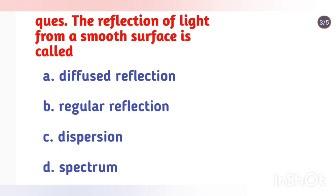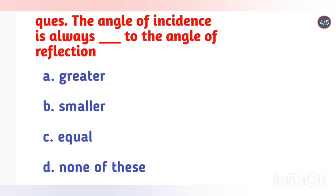The reflection of light from a smooth surface is called regular reflection. The angle of incidence is always equal to the angle of reflection.